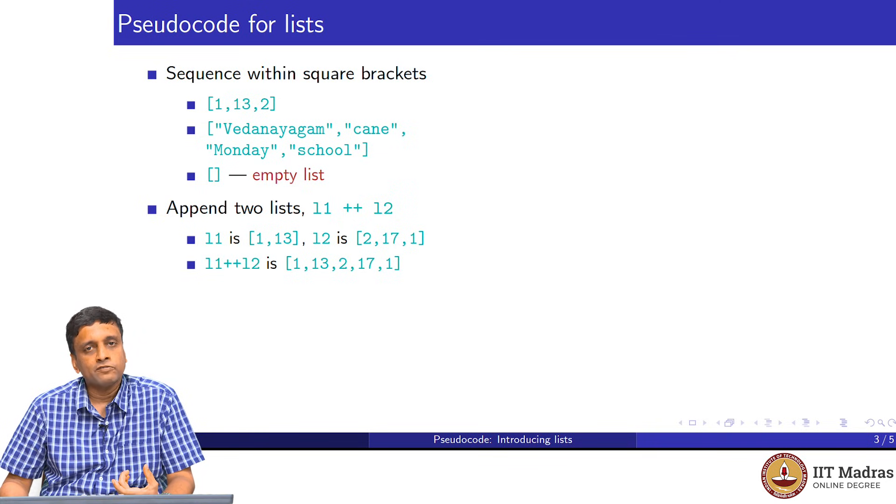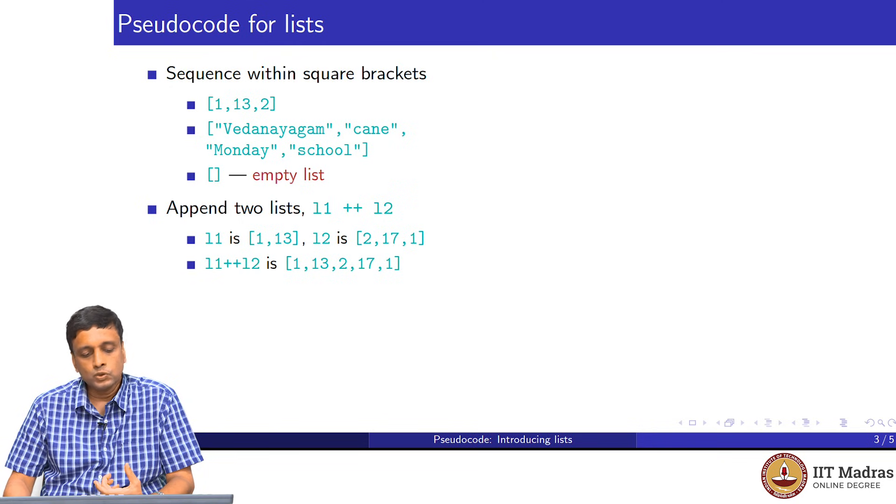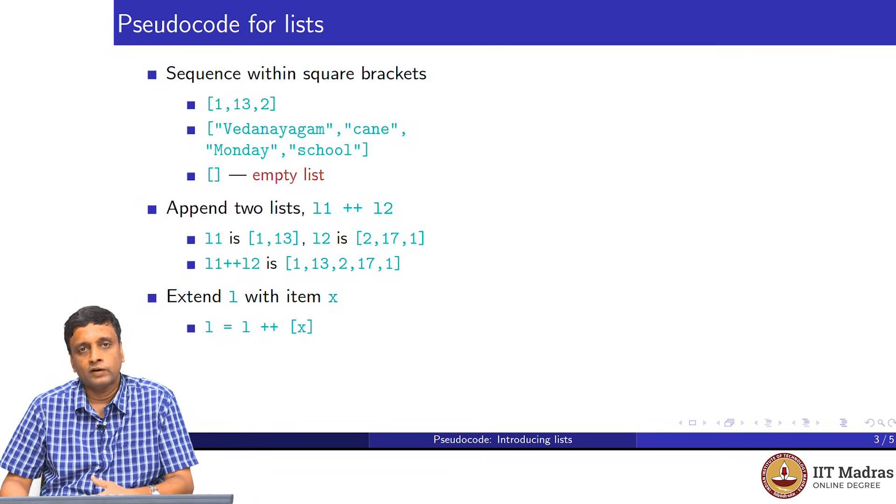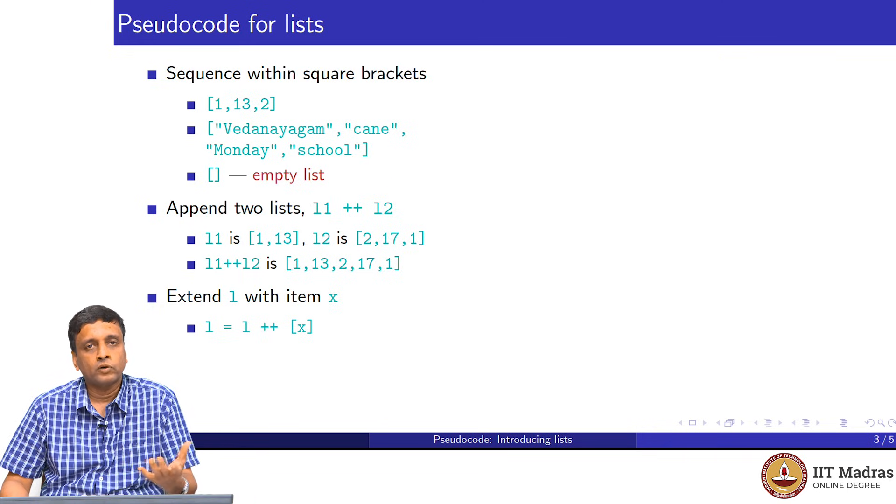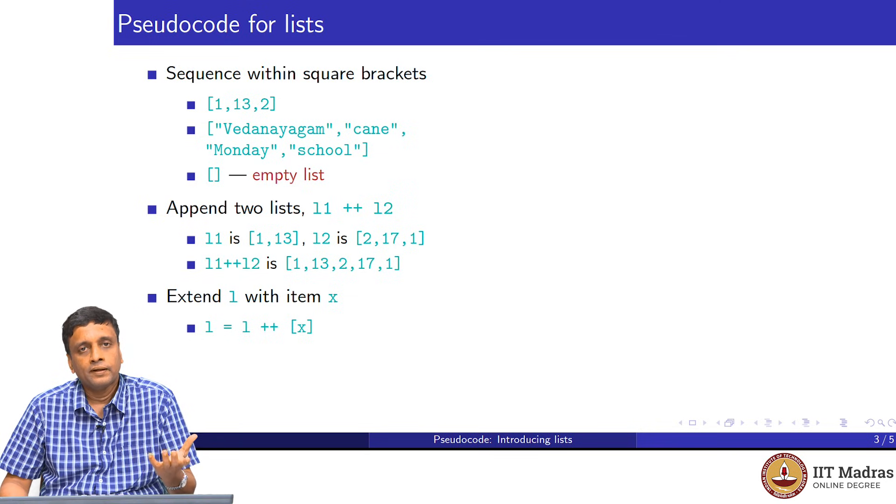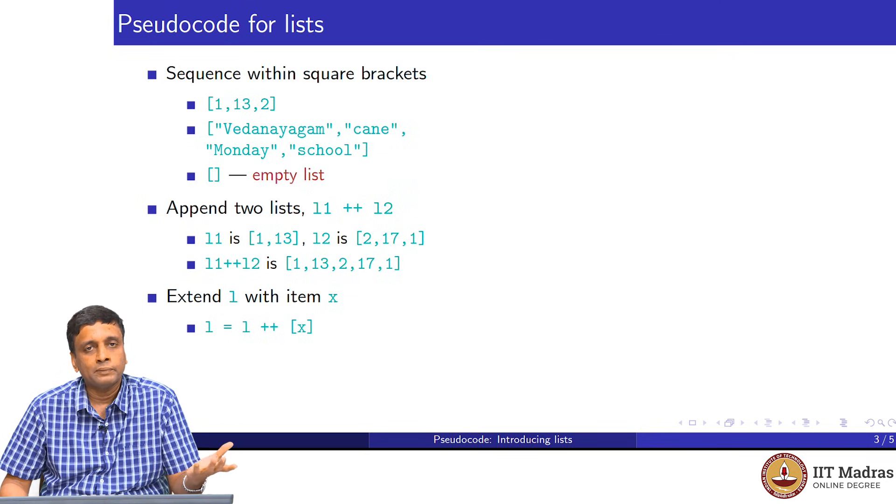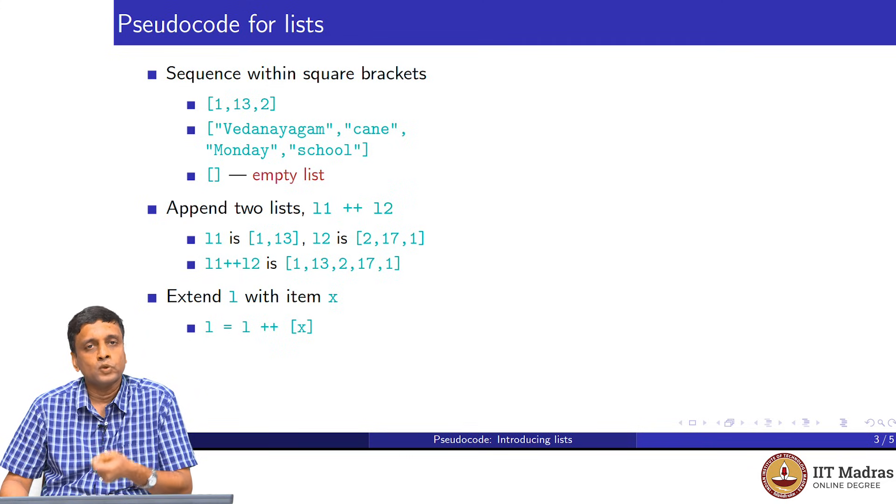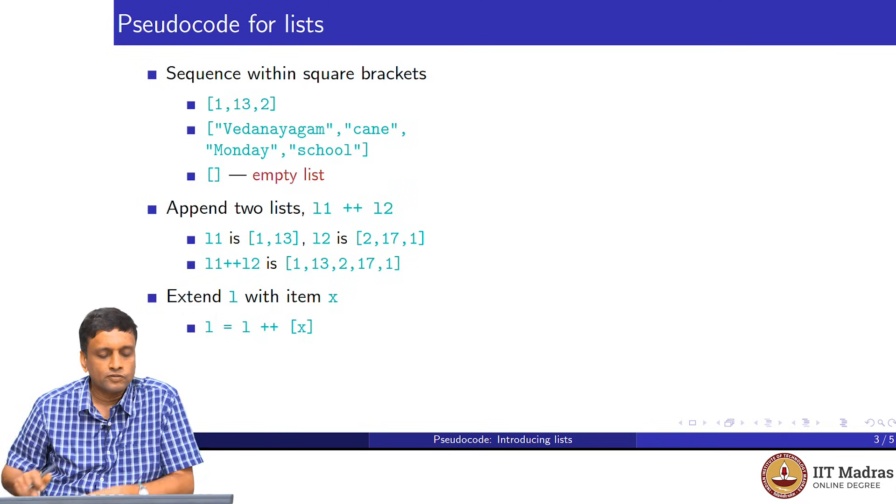This is the general case, but one very specific version of this that we will use is to add an element to a list. The most basic thing, just like incrementing a number by 1 if you have a counter and you want to say count equal to count plus 1, or if you want to take a sum and you want to say sum equal to sum plus some quantity. The most basic thing you can do with a list is to add one more element at the end of the list. The way we will do that is use this ++. If you want to add an element x, remember that ++ requires two lists.